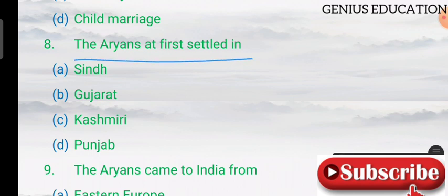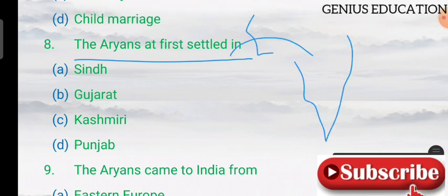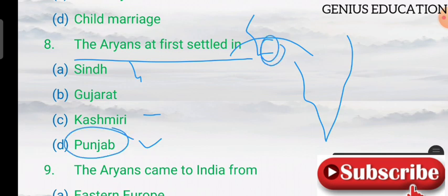Question 8: the Aryans first settled in — options include Sindh, Gujarat, Kashmir, and Punjab. The Aryans first settled in Punjab.